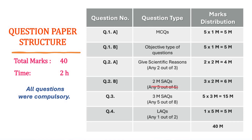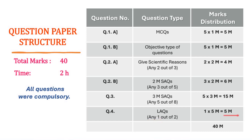Question 2b were short answer questions, each carrying two marks. Students had to attempt any three, accounting for a total of six marks. Question 3 also comprised SAQs but this time they were three markers. There were eight questions out of which students were expected to attempt any five, each carrying three marks, for a total of 15 marks. Question 4 were long answer questions — two questions given, students had to attempt any one.